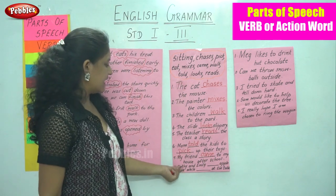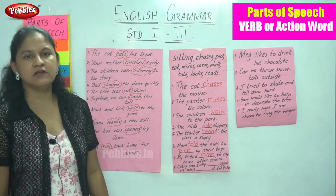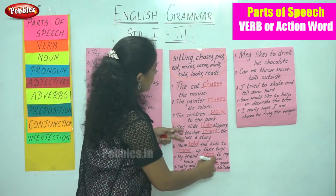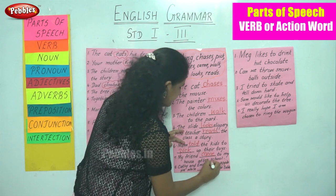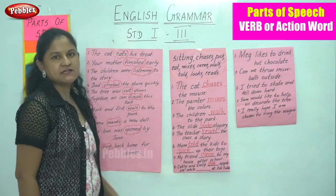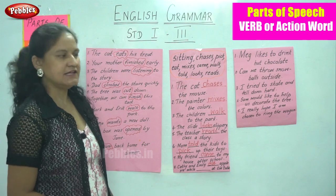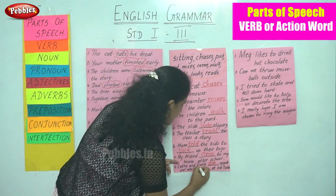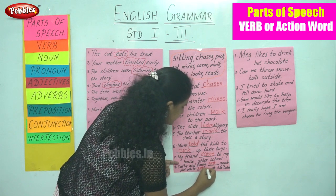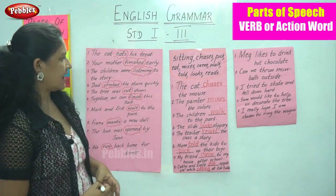Last sentence: 'Kathy and Emily ___ apple pie while ___ at the table.' What do we do with an apple? We eat it, so Kathy and Emily eat apple pie. And what do you do at the table? You sit — so they eat apple pie while sitting at the table. Sitting becomes the second action word.